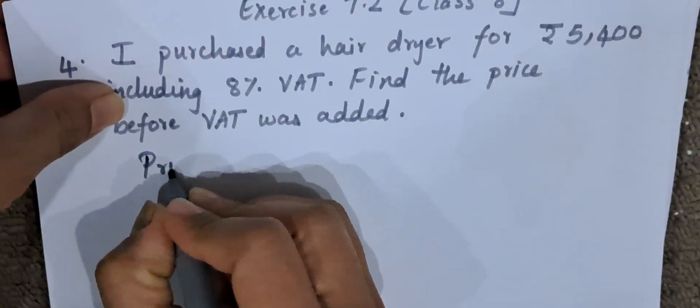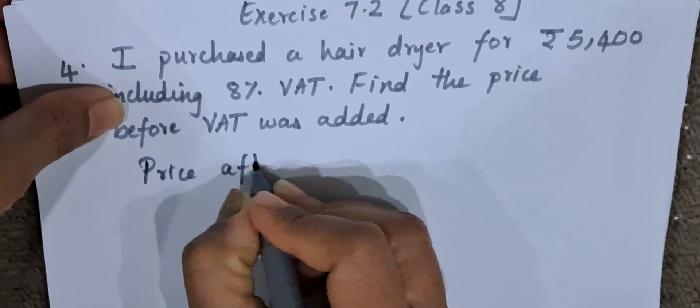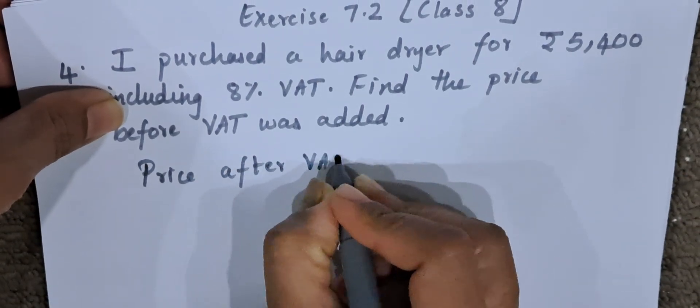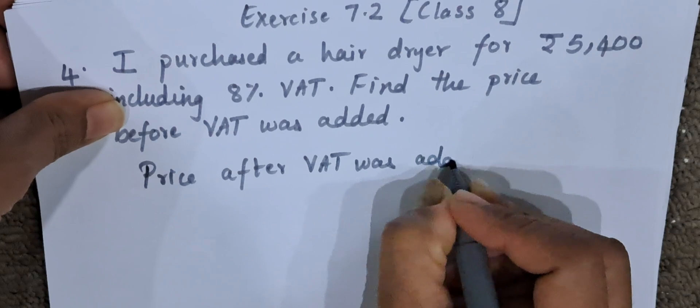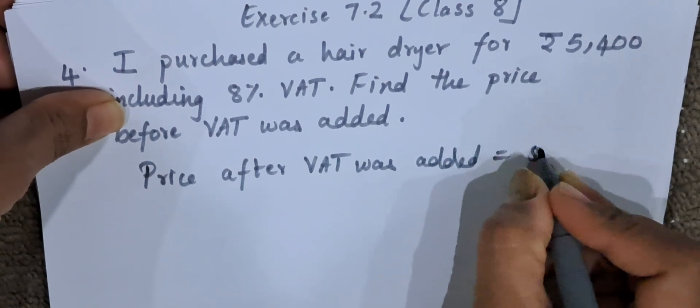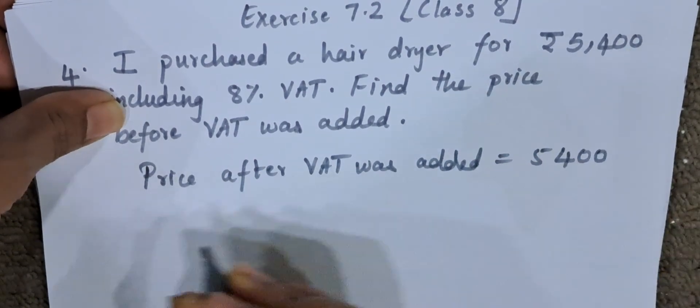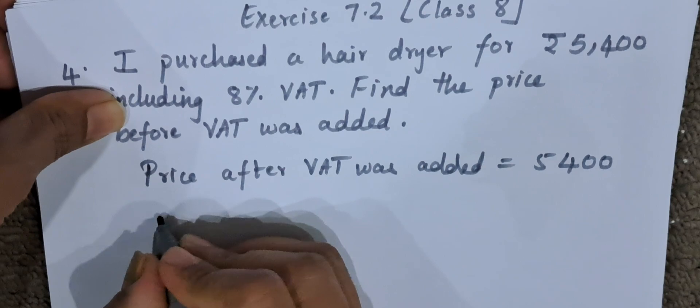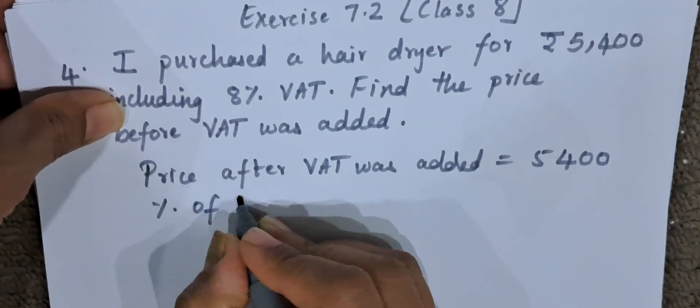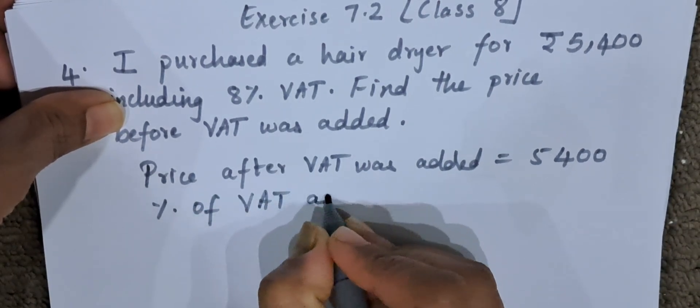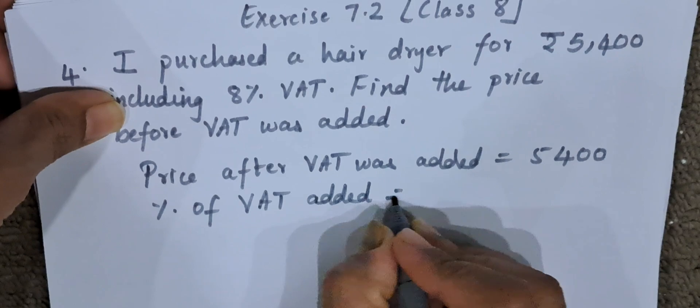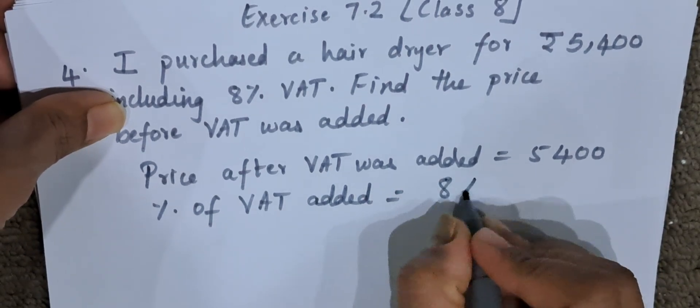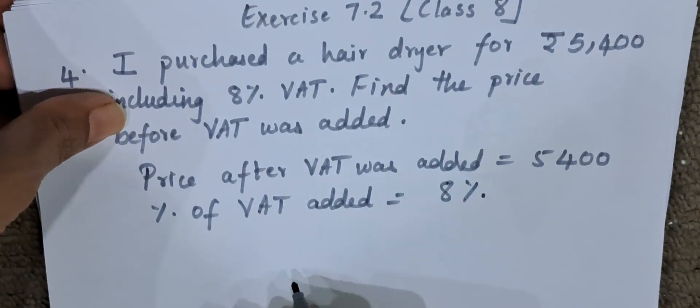For that, let us begin with price after VAT was added. That is how much? 5,400 rupees. Now percentage of VAT added—how much percentage VAT is added? 8%. Now here we have to be very careful when we are doing cross multiplication.